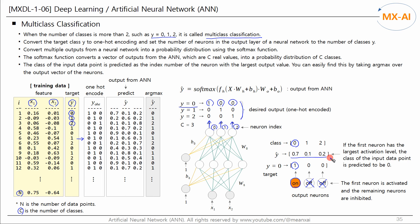The output layer uses the softmax activation function, which converts the output vector into a probability distribution. If the first neuron has the largest activation level, the class of the input data point is predicted to be 0. That is, the class is predicted as the index number of the neuron with the largest output value. You can easily find this by taking argmax over the output vector; in this case, argmax of Y-hat is 0.